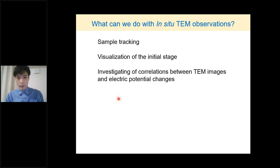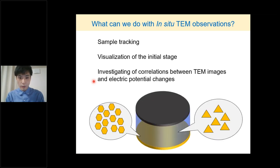In in-situ observation of electrochemical reactions, there are three key experimental strengths: tracking changes of the same sample while over several experimental cycles, visualizing the initial stage of electroplating, and investigating the correlation between TEM images and electrical potential changes. First, I will briefly explain the tracking of the same sample. Typically, macroscopic sample characterization is used, so even if we observe the same sample, it is not easy to compare sample changes. In-situ observation, on the other hand, makes it possible to investigate the process of the same sample.